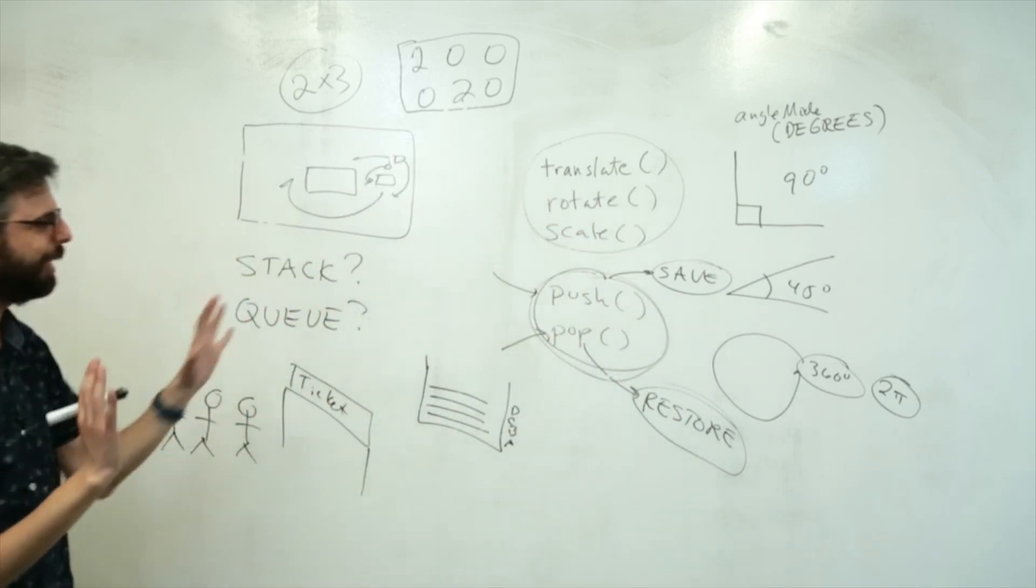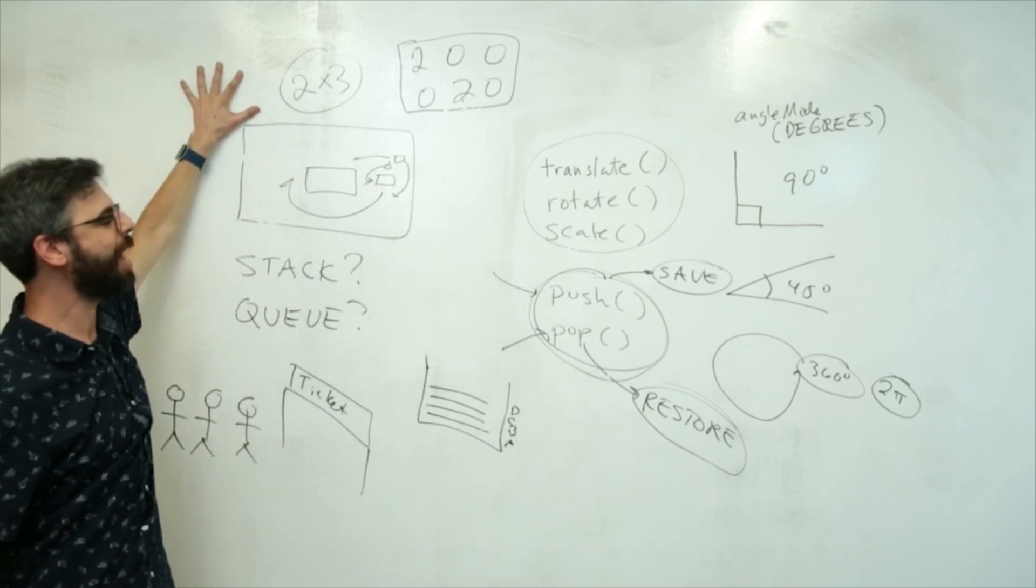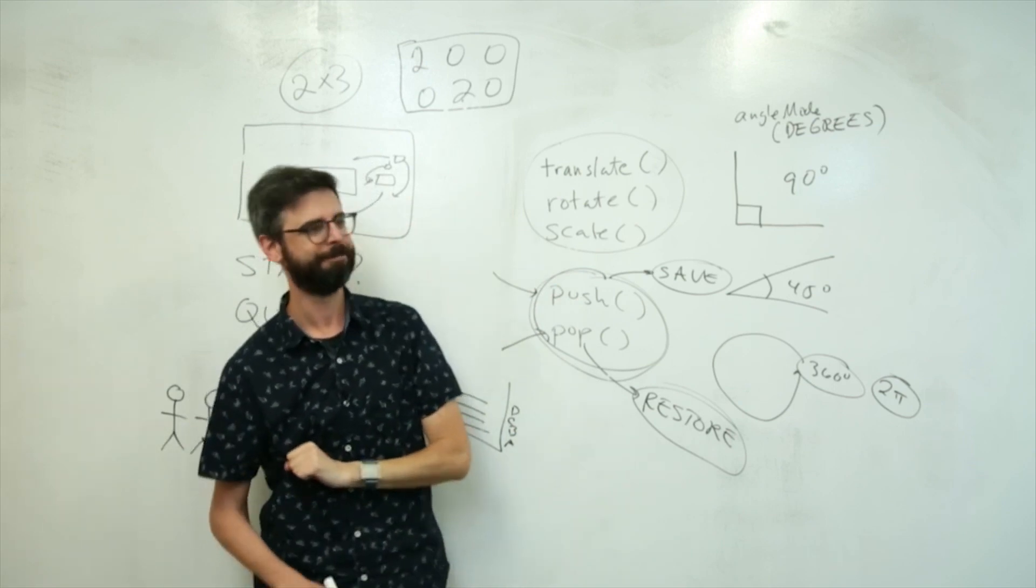So that's really the last piece that I want to explain. What is push and pop, and why do we talk about a matrix when we talk about transformations? Okay, thanks.